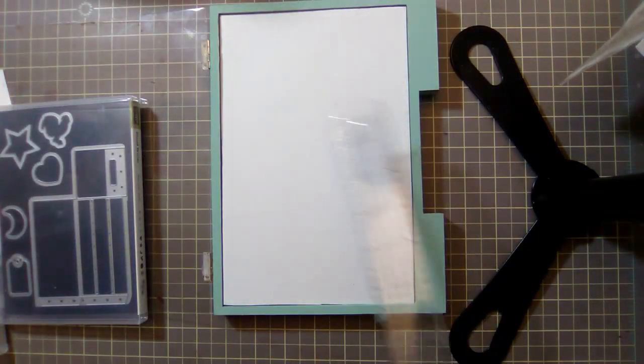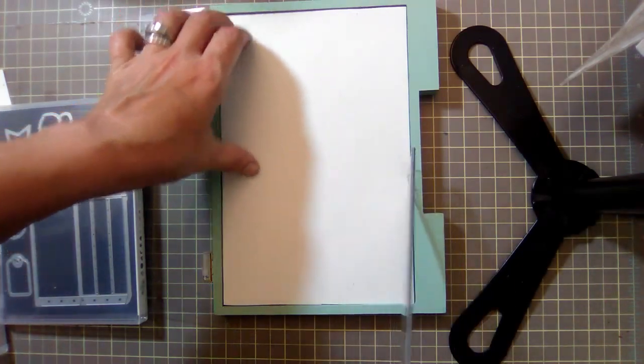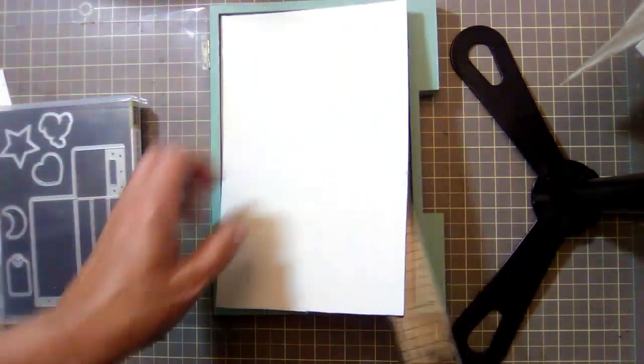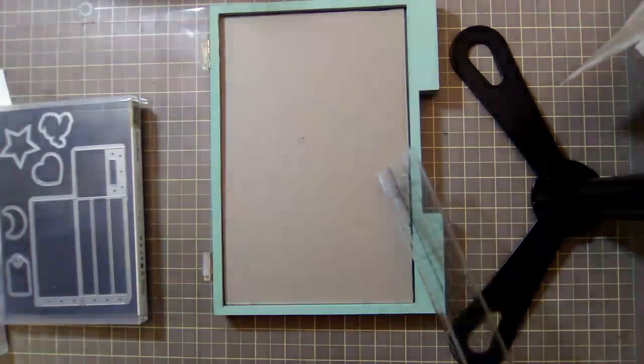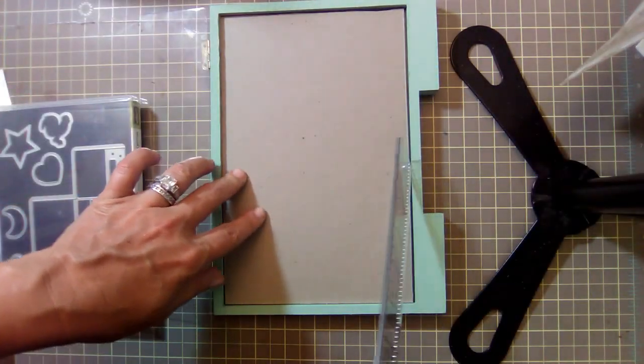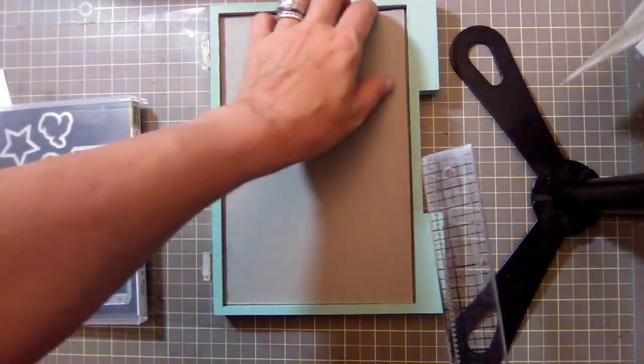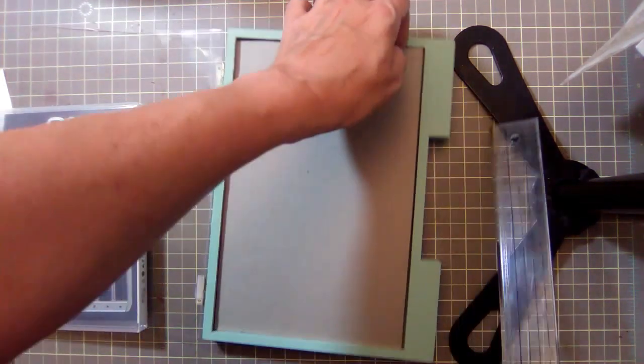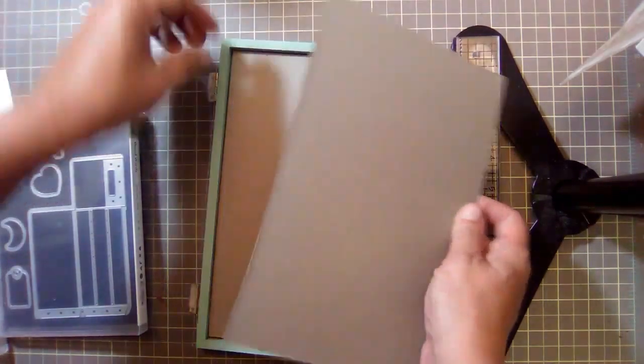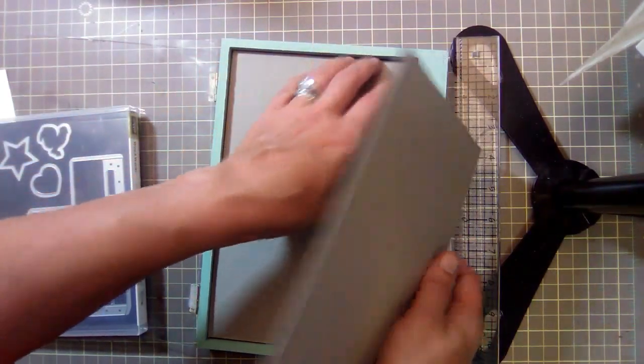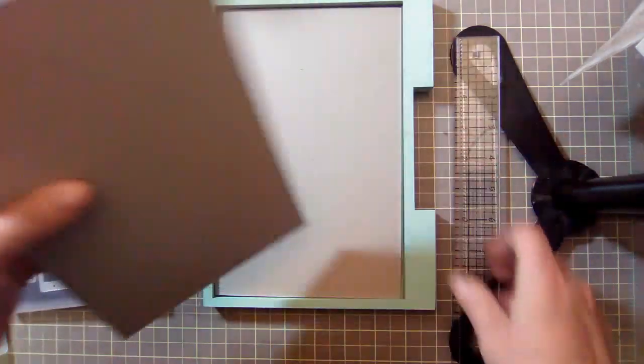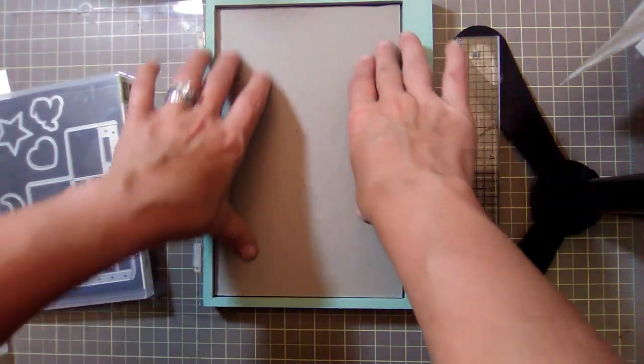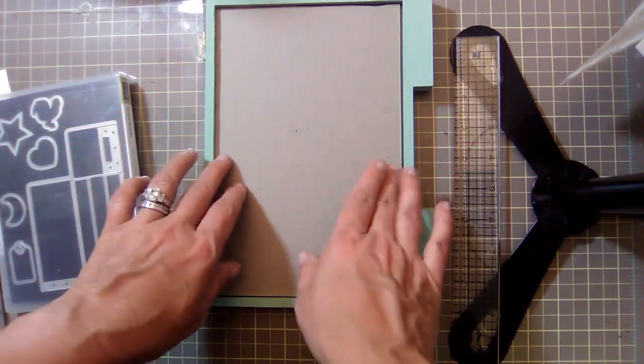So you'll cut down a magnetic sheet nine and a half by six and a quarter, or whatever measurement you have on the inside. And then I have in here a piece of fun foam for my photopolymer stamps, right? And then underneath, I just filled it with chipboard until it was high enough. So I think I did three pieces. This is super thick chipboard. I mean, you can see how thick that is.